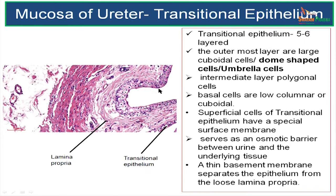The superficial cells of the transitional epithelium have a special surface membrane. The importance of this membrane is that it is going to serve as an osmotic barrier between urine and the underlying tissue. There is also a thin basement membrane which is going to separate the epithelium from the loose lamina propria.